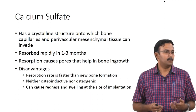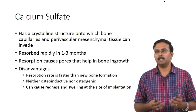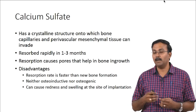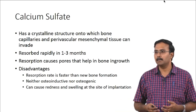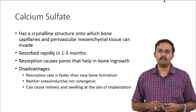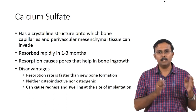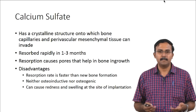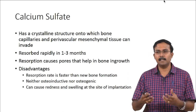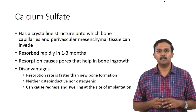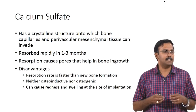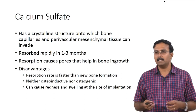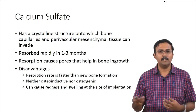However, the resorption rate of calcium sulphate is very fast — bone formation takes up to 4 months while resorption can start within a month. This means it cannot be used where new bone growth is needed before the material is removed. The ideal state is where resorption and new bone formation are balanced. Calcium sulphate is neither osteoinductive nor osteogenic — it does not trigger new bone formation, only helps in bone ingrowth. It can also cause redness, swelling, and serious pain at the implantation site, leading to implant failure.